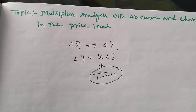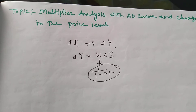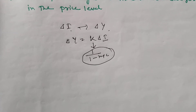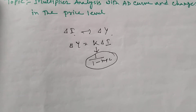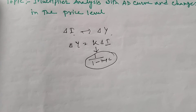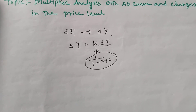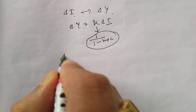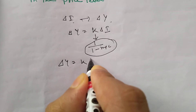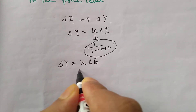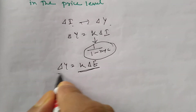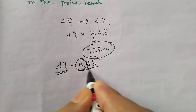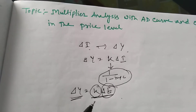In the case of the expenditure multiplier, we do the same thing — we see what is the impact of a change in aggregate expenditure on the change in income. Income changes by the multiplier times the change in aggregate expenditure; that is, the change in income equals K (multiplier) times the change in expenditure. This is called the expenditure multiplier.